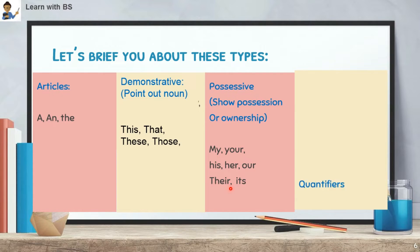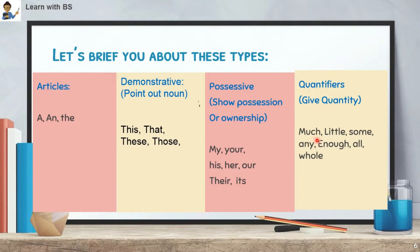The fourth type is Quantifiers. Quantifiers give quantity. Examples of quantifiers are: much, little, some, any, enough, all, whole. These four types of words — Articles, Demonstrative, Possessive, and Quantifiers — can all come before a noun. So: 'a book' (article), 'this book' (demonstrative), 'my book' (possessive), 'some books' (quantifier). These are all determiners.